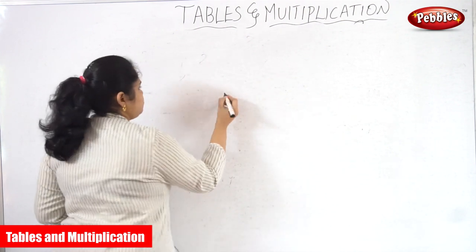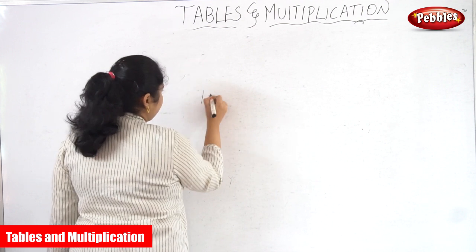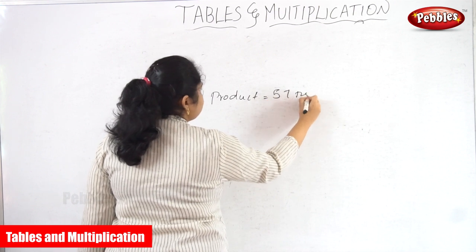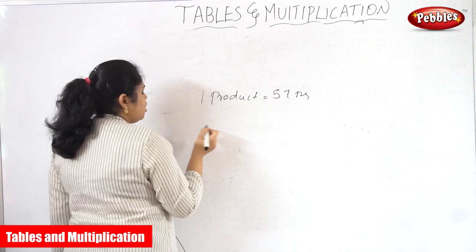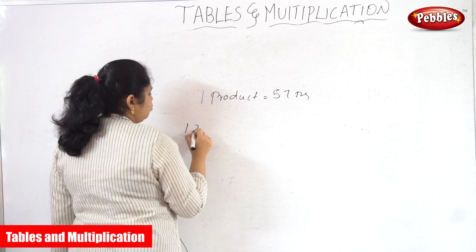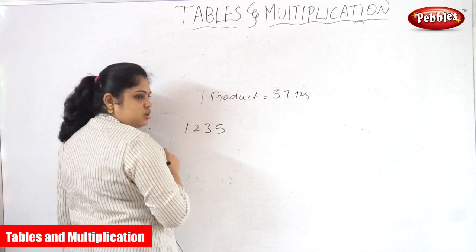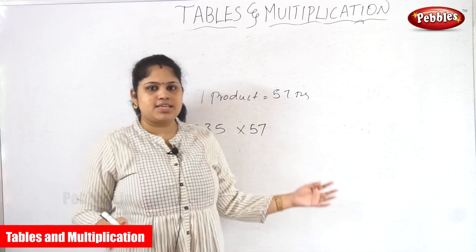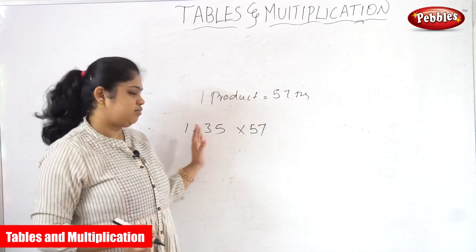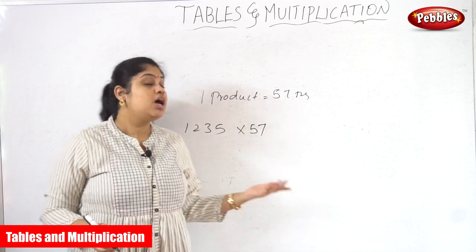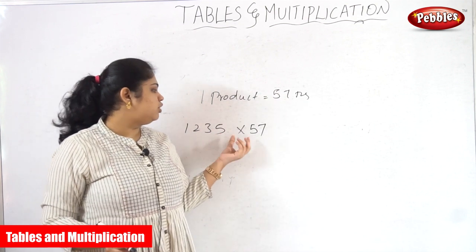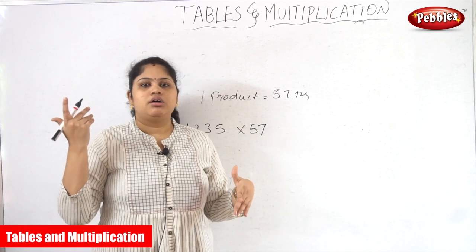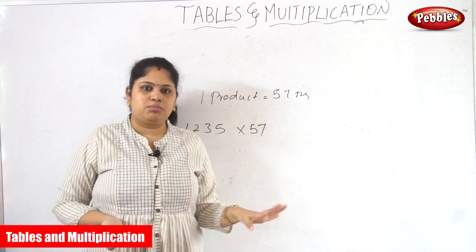For example, if the cost of one product is 57 rupees and I am buying 1235 products, instead of writing 57 added 1235 times, I simply write 1235 into 57. This is the main advantage of multiplication over repeated addition.